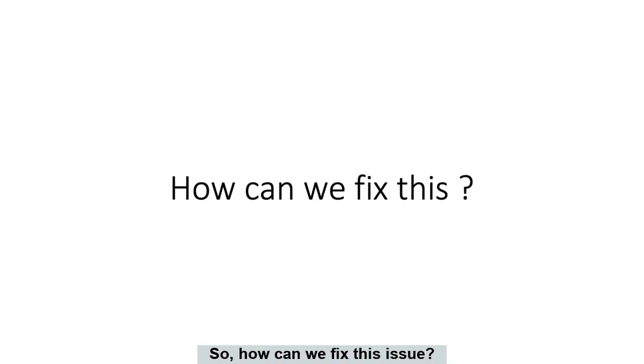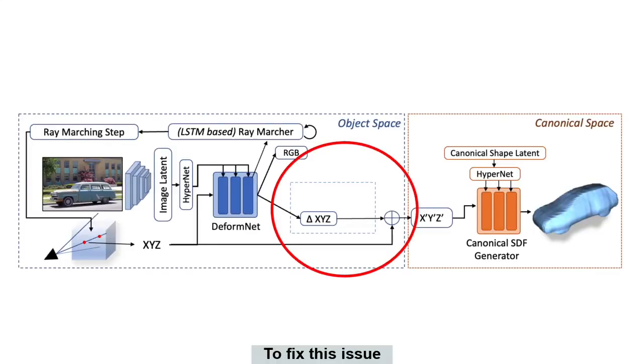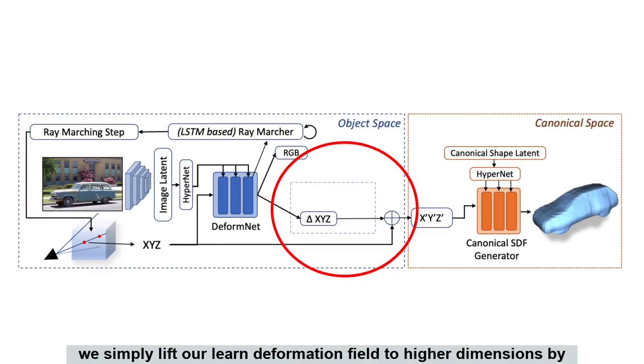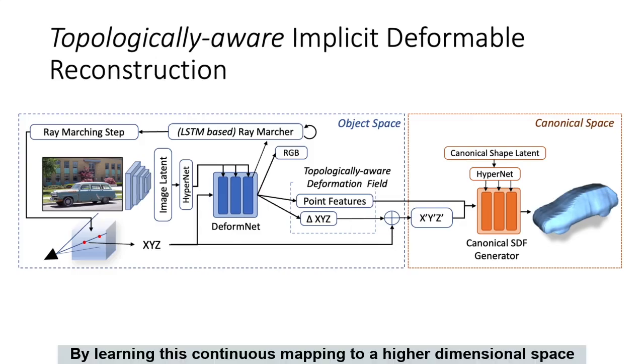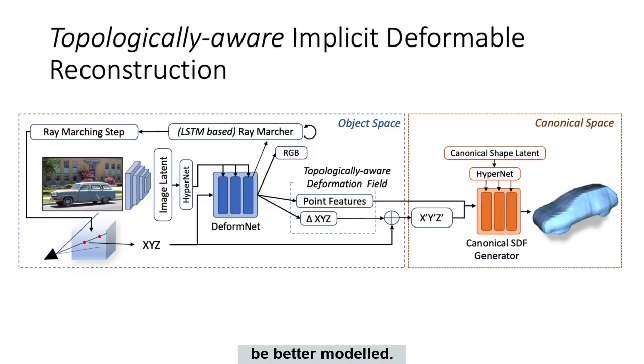So how can we fix this issue? To fix this issue, we simply lift our learned deformation field to higher dimensions by additionally learning some per-point features. By learning this continuous mapping to a higher dimensional space, the topological variations in the ground-truth shapes can be better modeled.